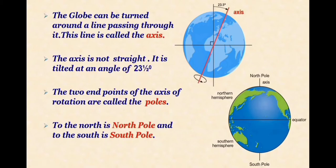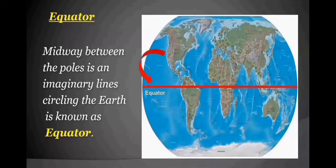It is tilted at an angle of 23 and a half degrees. The two end points of the axis of rotation are called poles. Can you see the poles? To the north it is north pole and to the south it is south pole.